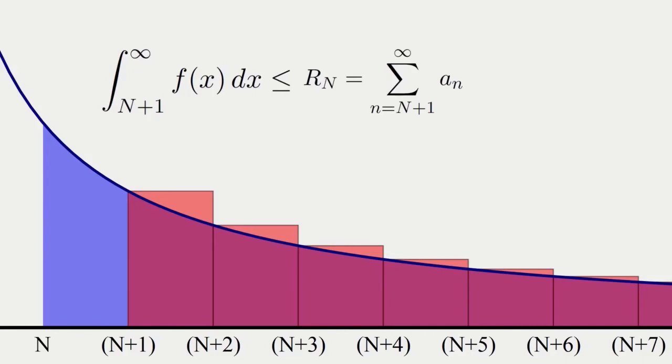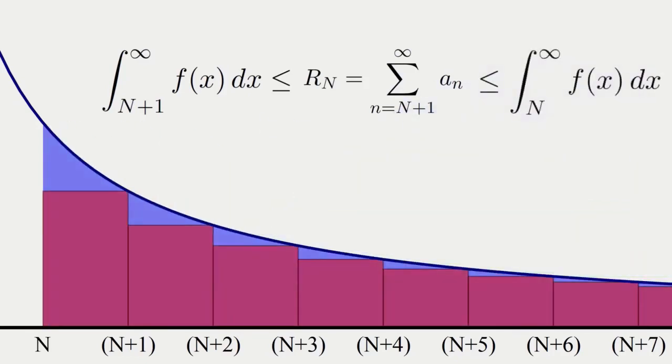However, once again, I can play the same trick with the rectangles that I used before. If I shift all of the rectangles to the left by one unit, thus turning the rectangles from being left-oriented to being right-oriented, you can see that they all fit neatly inside the blue region, which means, of course, that the blue area is larger.